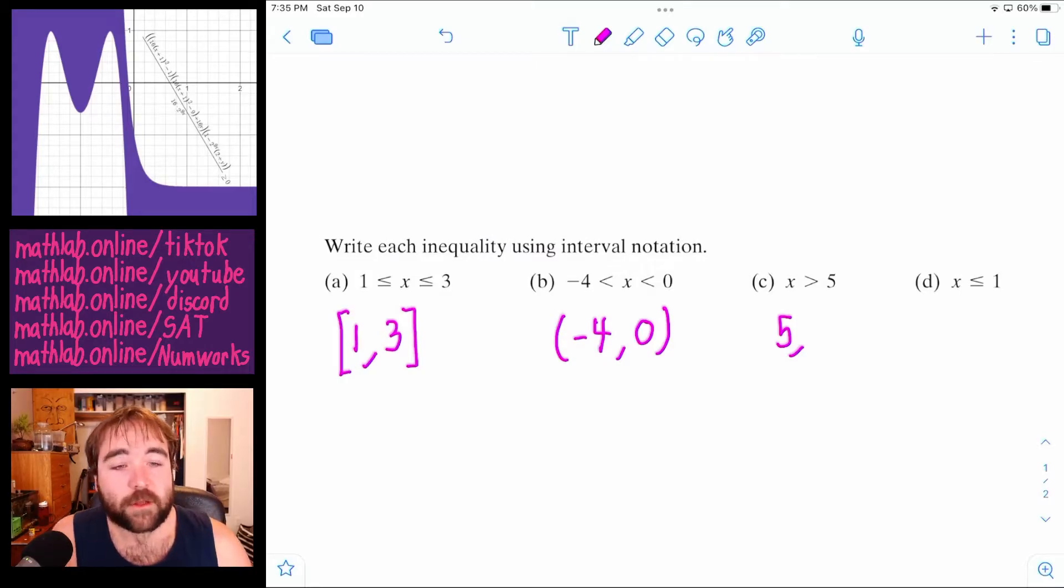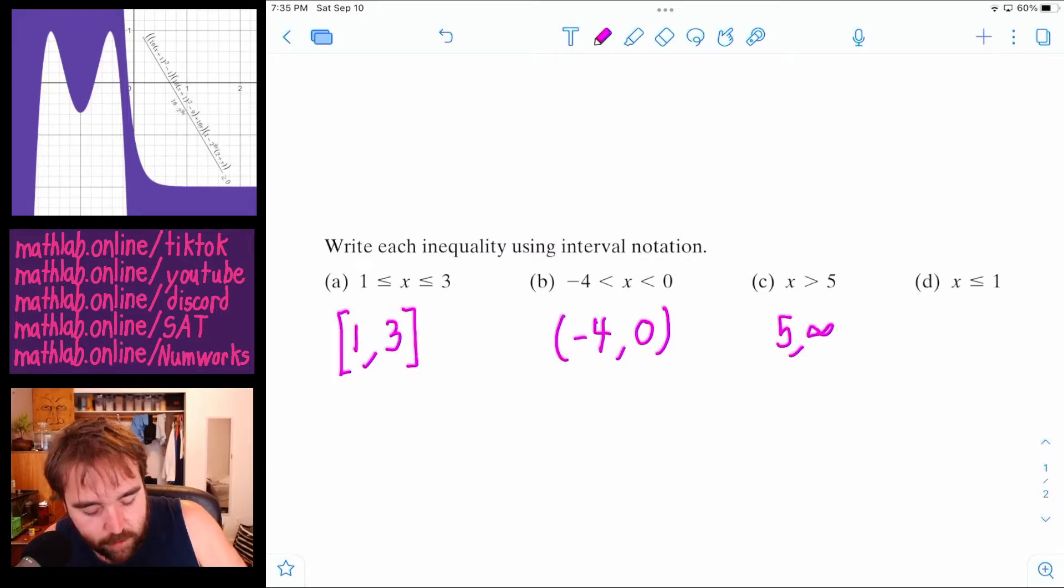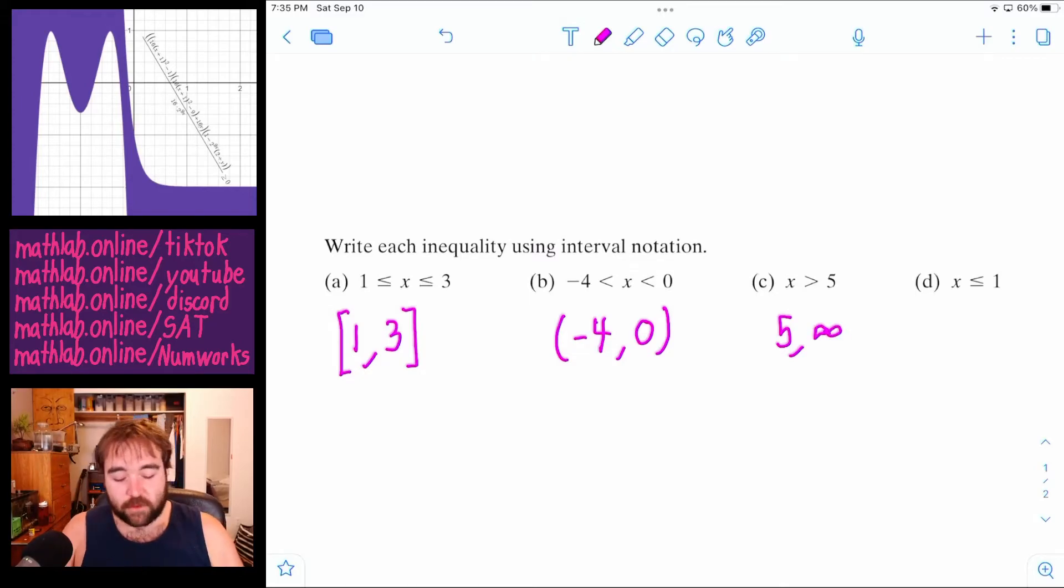Well, there's no limit. So the biggest thing x can be is infinity. And we're going to say that. So we're going to say that it can be, as a horrible infinity sign. We're going to say anything from five to infinity. And then it has to be bigger than five, not equal to five. So we'll put a parenthesis.